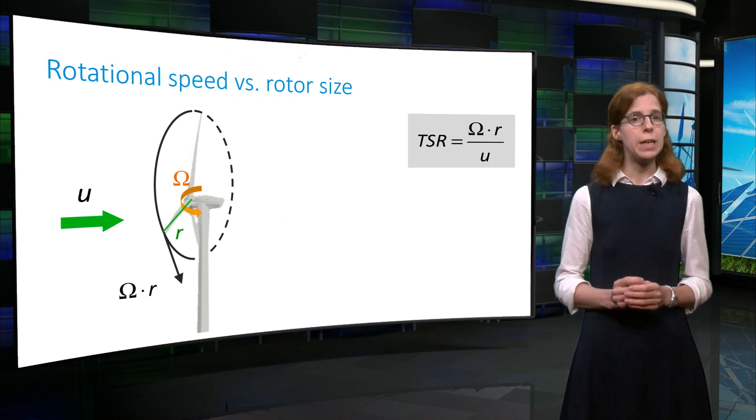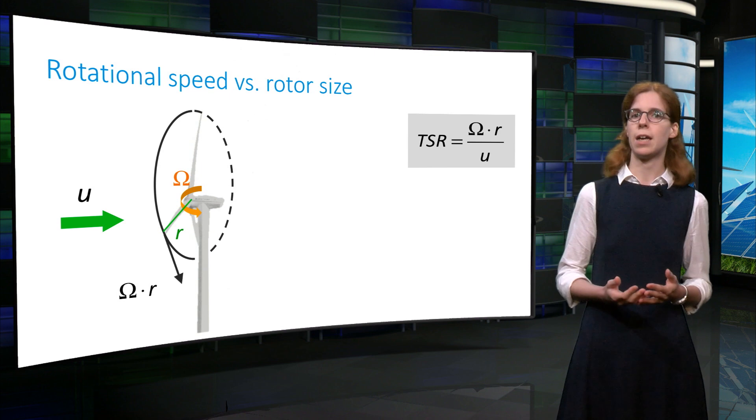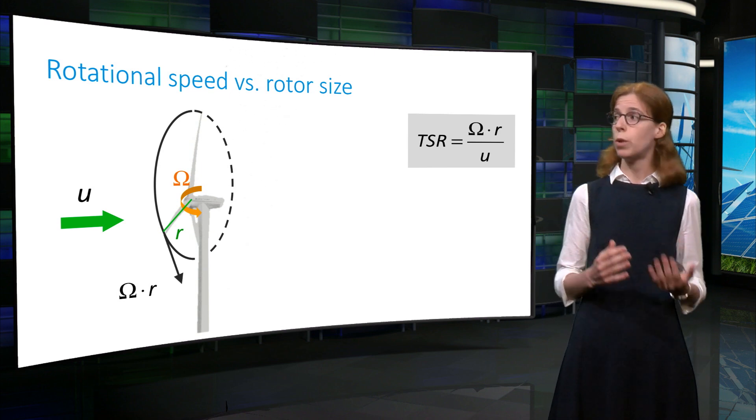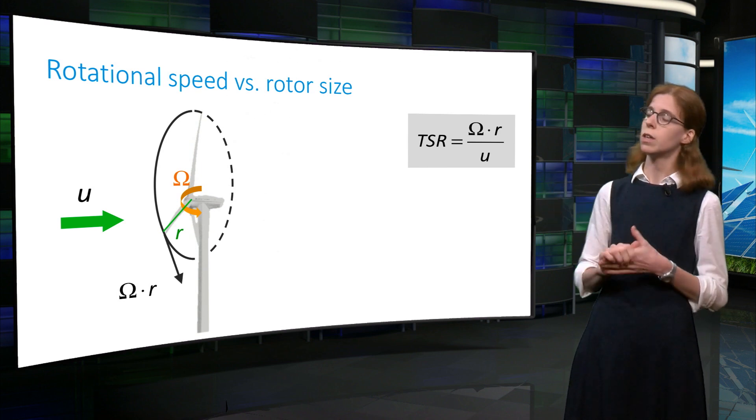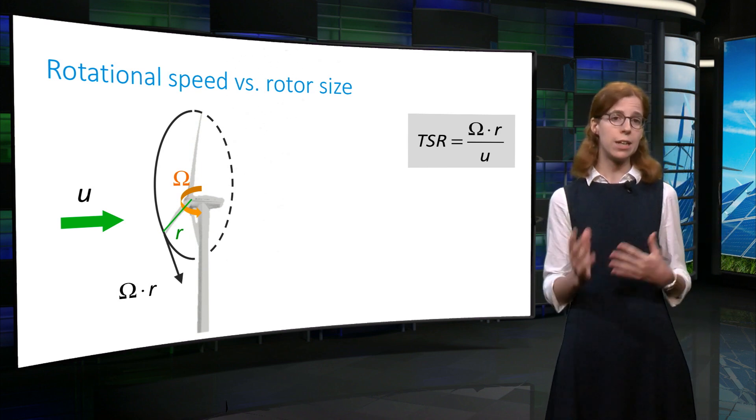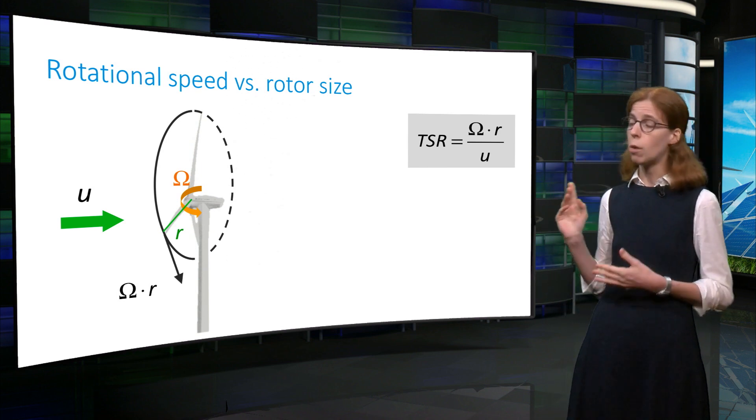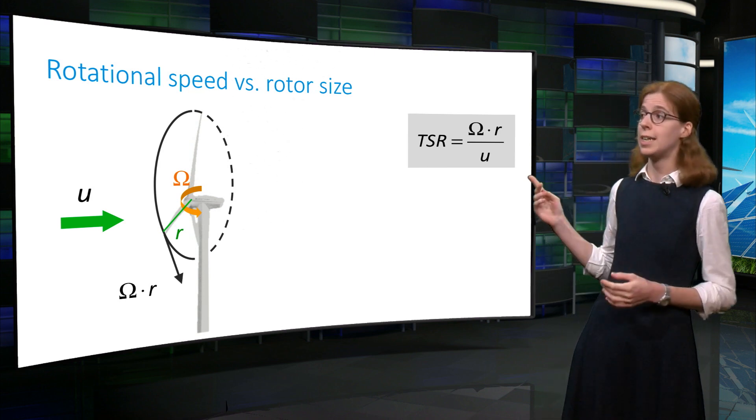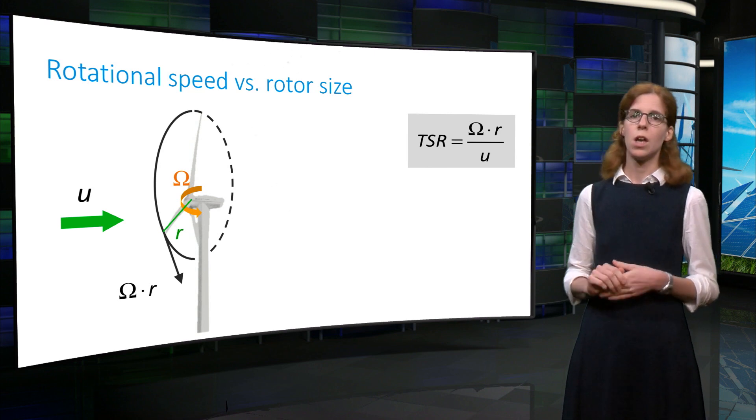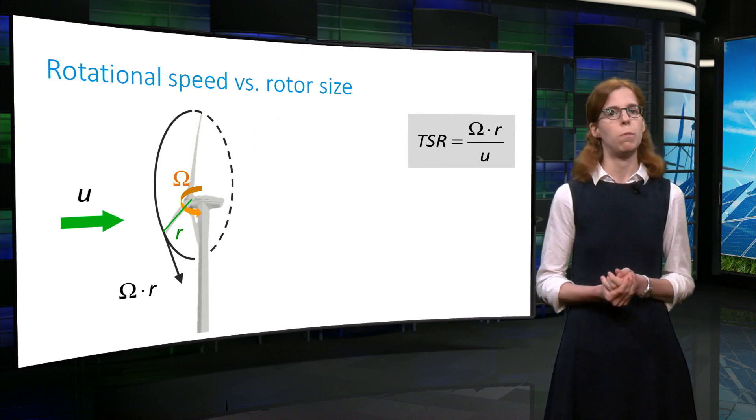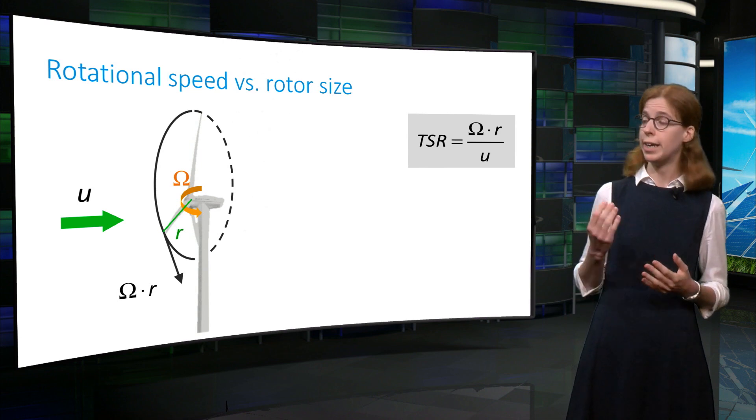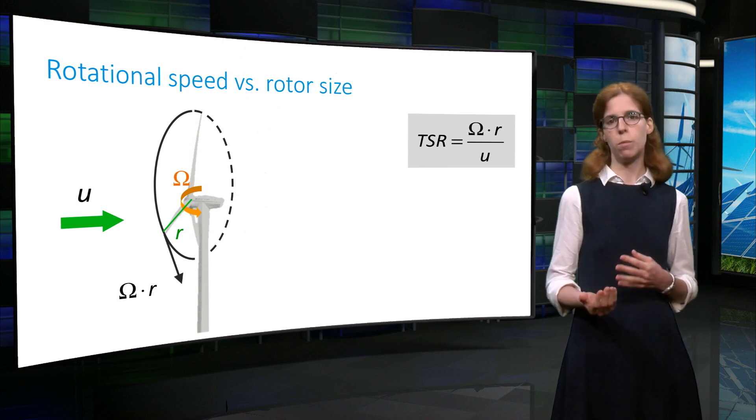But this also means that a wind turbine is designed to operate at a given tip speed ratio, that is the ratio between the velocity at the tip of the blade and the incoming wind speed. This ratio is commonly denoted TSR. Note that the velocity of the tip of the blade is the product of the rotational speed of the rotor, here omega, and the length of the blade, R.